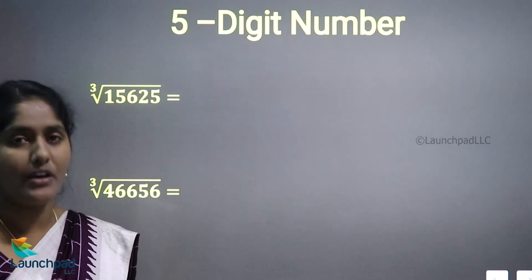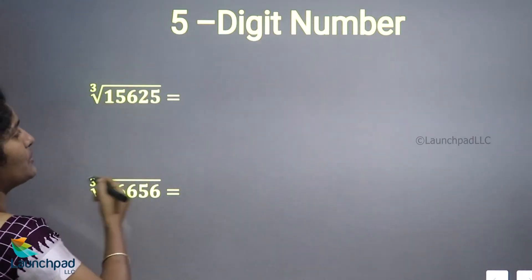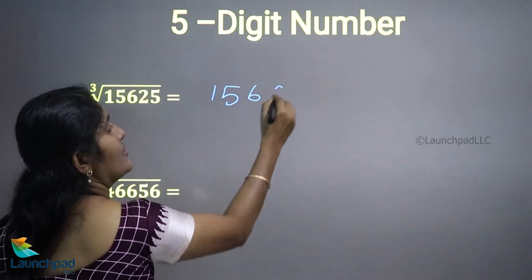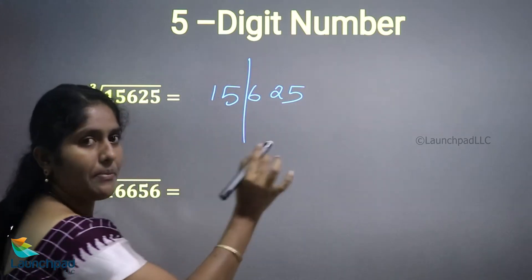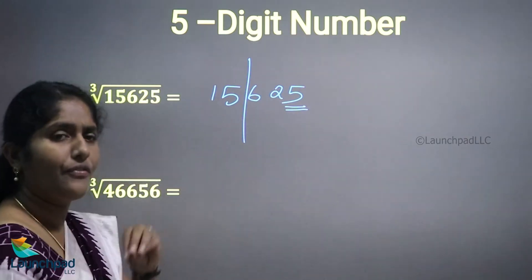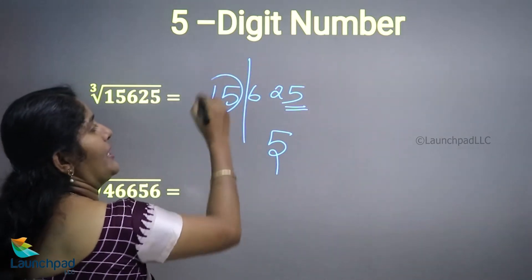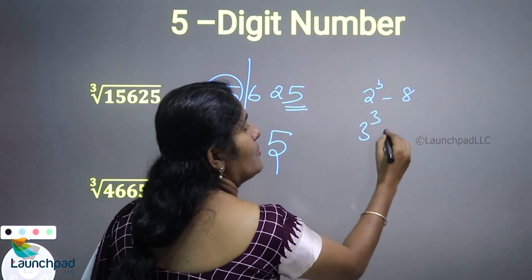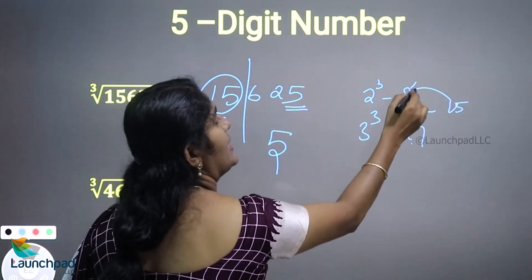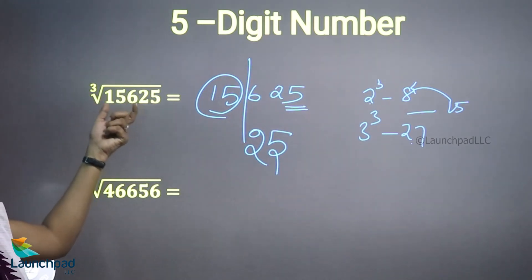Now how to find the cube root of a 5-digit number — the same procedure applies. Take the number 15625. Split from the right into groups of 3: first part is 15, second part is 625. The unit digit is 5, so the ending digit is always 5. Now 15 lies between 8 (2 cubed) and 27 (3 cubed). We consider the previous value, 8, which corresponds to 2 cubed. So the answer is 25. The cube root of 15625 is 25.